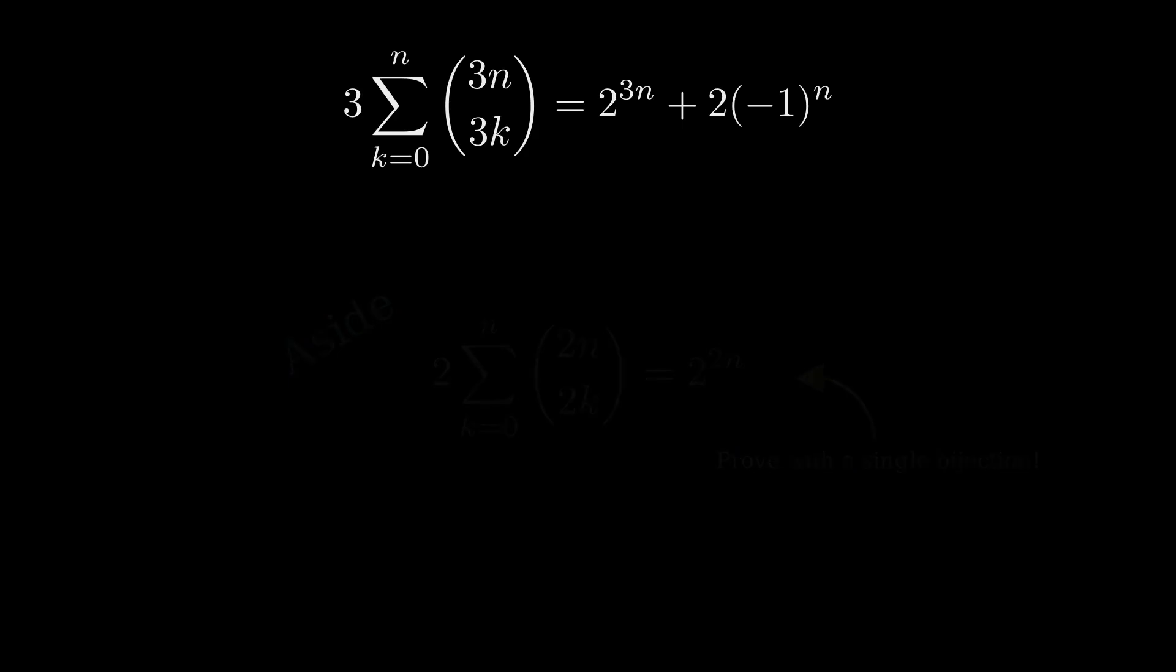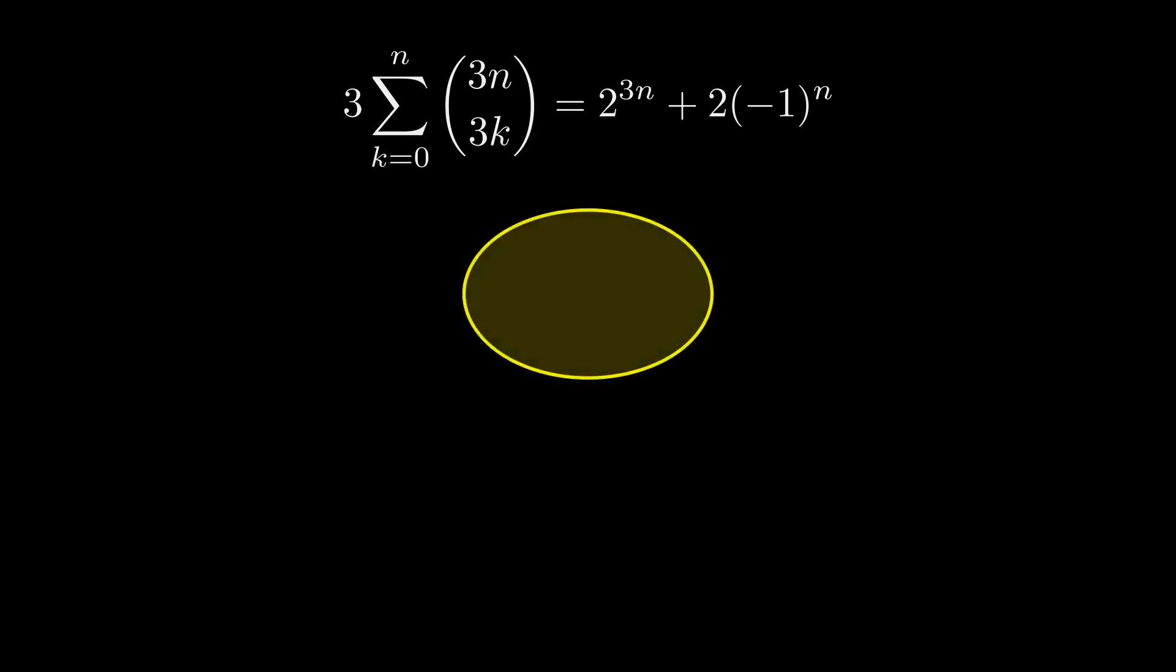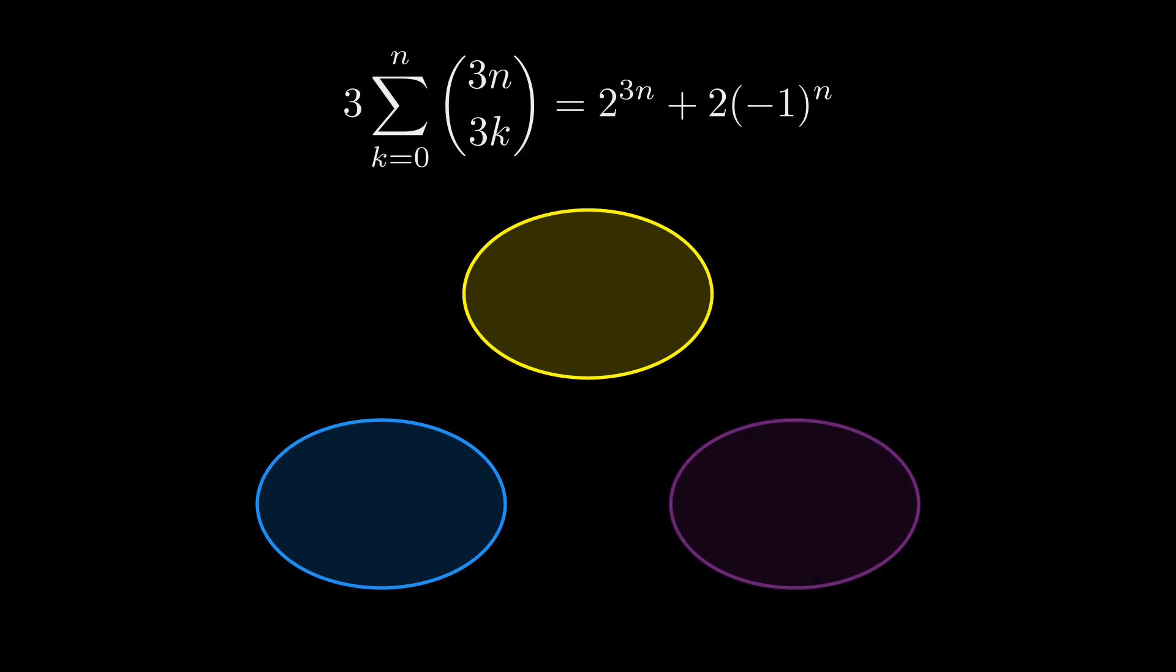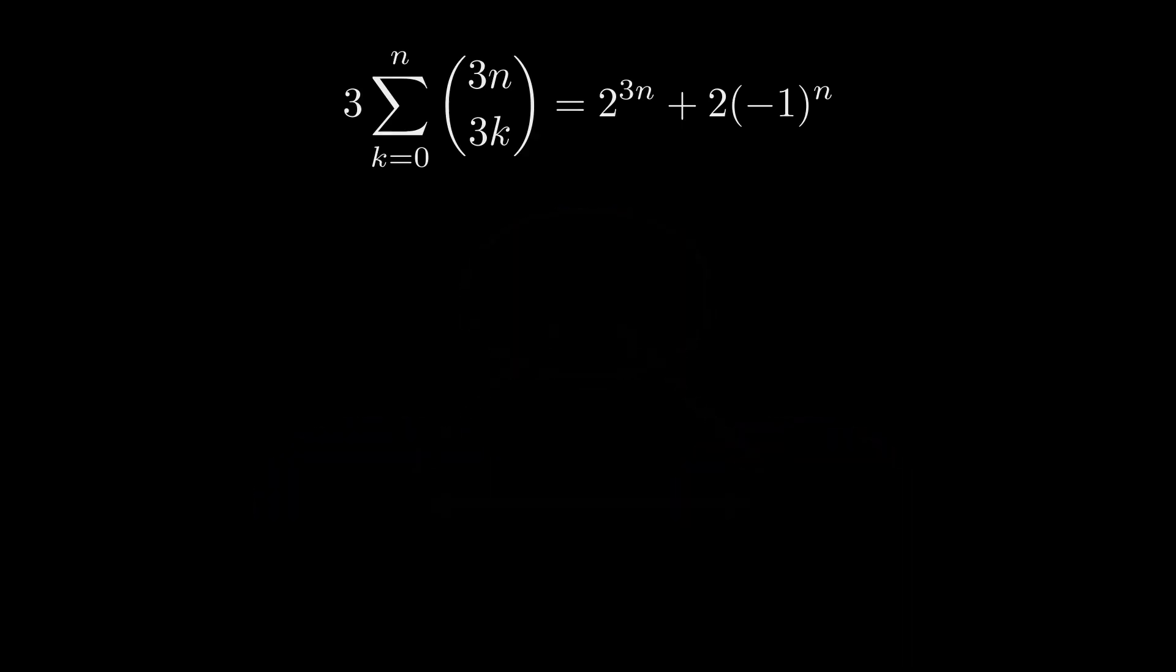Anyway, back to our trijective proof. The strategy is to create three sets which all have a size very close to the sum of 3n choose 3k. By having almost a complete trijection among those sets, we'll see that they all have the same size except for a slight mismatch that depends on the parity of n.